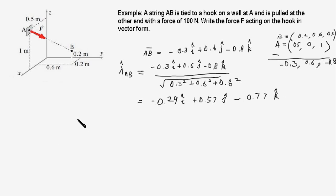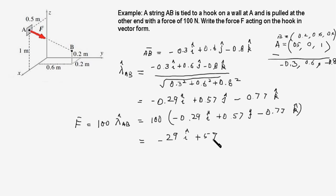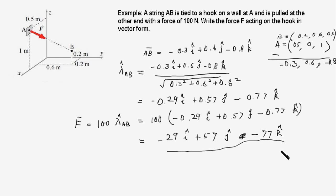Therefore our force F, which is given as 100 newtons in magnitude, is 100 times lambda_AB, which equals 100 times (−0.29 i-hat + 0.57 j-hat − 0.77 k-hat). This gives F = −29 i-hat + 57 j-hat − 77 k-hat newtons. This is how the 100 newton force along AB can be represented in vector form — that's our answer.